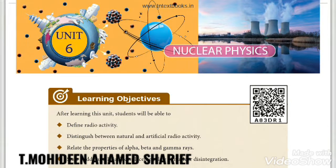J.J. Thomson discovered cathode rays, known as electrons, experimentally. Later, Goldstein discovered positive rays, which are named as protons by Rutherford. In 1932, James Chadwick discovered chargeless particles called neutrons.